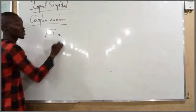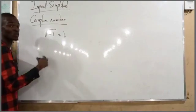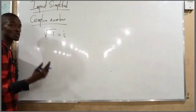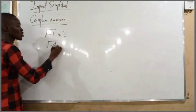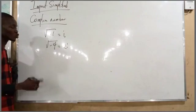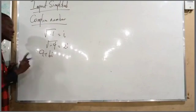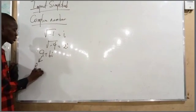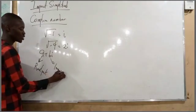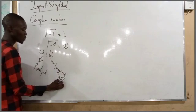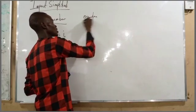A complex number originated from the square root of minus one. In secondary school we were told the square root of minus one is not possible, whereas it is possible — it gives us a complex number, which we term as i. So the square root of minus four gives us 2i. The standard equation of a complex number is a plus bi, where a is the real part and b is the imaginary part. A complex number is a mixture of the real part and the imaginary part.